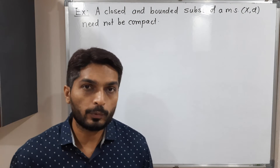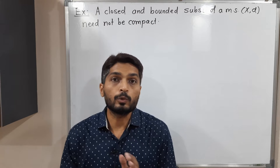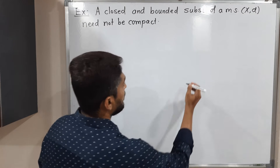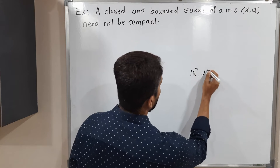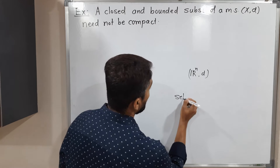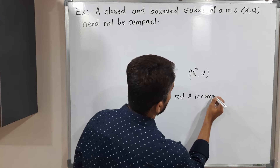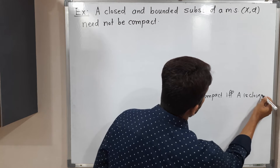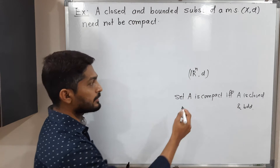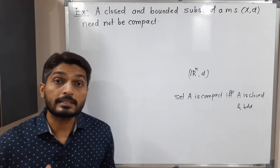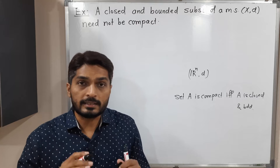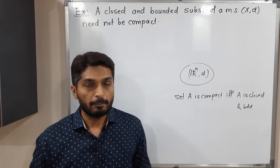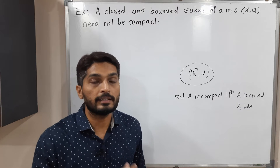Hi everyone. In this video we are going to discuss the result that every closed and bounded set need not be compact. We have seen one result: in metric space R^n with Euclidean distance D, a set A is compact if and only if A is closed and bounded. But this result is true only for R^n with Euclidean distance. If you have any general metric space (X, D), this result need not be true.